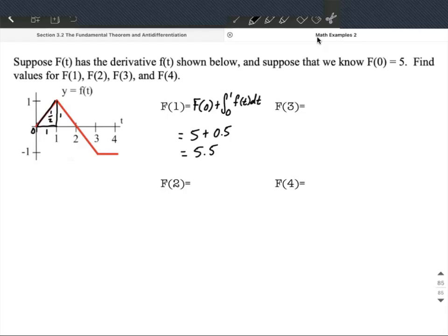Next, let's find F(2). That's F(0) plus the integral from 0 to 2 of f(t)dt.